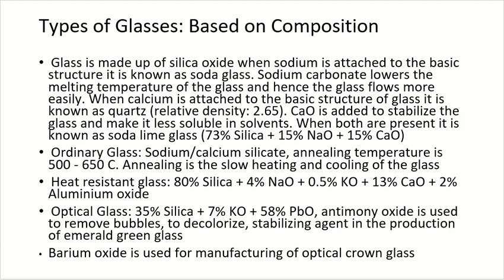The various types of glasses based on their composition: the basic structure of glass includes silica oxide. When sodium is attached to this, it is known as soda glass. Sodium carbonate is added to lower the melting point. When calcium is added instead of sodium, it is known as quartz, with a relative density of 2.65. When both sodium oxide and calcium oxide are added, this type of glass is known as soda-lime glass. Calcium oxide is used to stabilize the glass so it will not be easily dissolved in solvents.